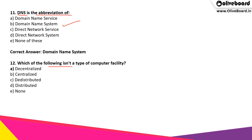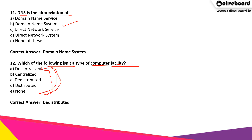Which of the following is not a type of computer facility? Out of the following, there is one which is not a part of computer facility. The correct answer is option C, which is de-distributed, because decentralized, centralized, or distributed are all types of computer facility.